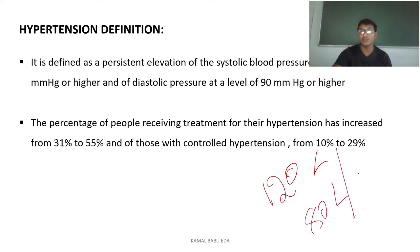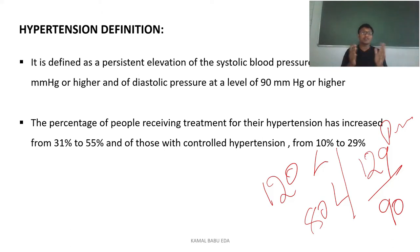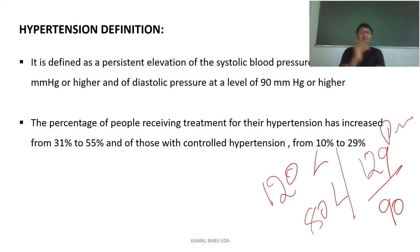Anything beyond these values — for example, 129/90 — is termed as pre-hypertension, or more than that, it will be hypertensive or higher hypertensive cases. Hypertension is one of the major causes and it acts as a silent killer, and it is a main cause for a lot of deaths occurring currently. Treatment rates have increased from 31% to 55%, and patients taking medication for hypertension have increased from 10% to 29%.